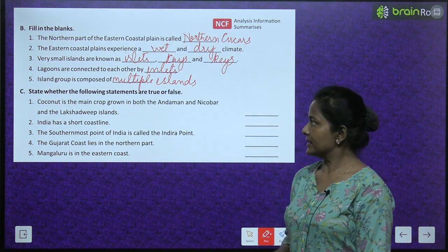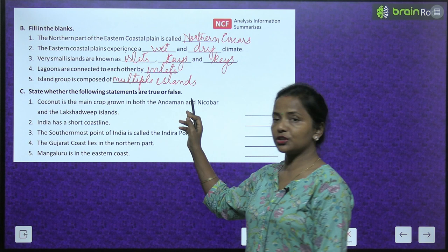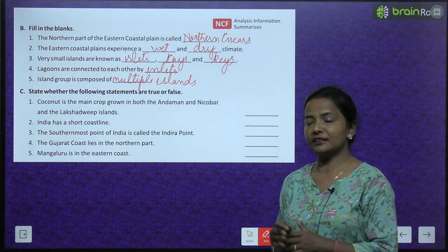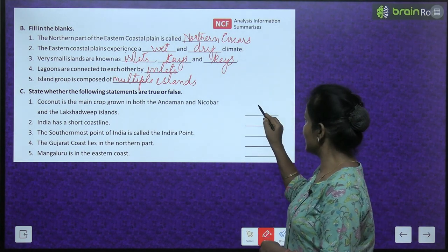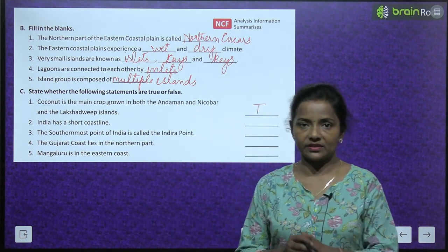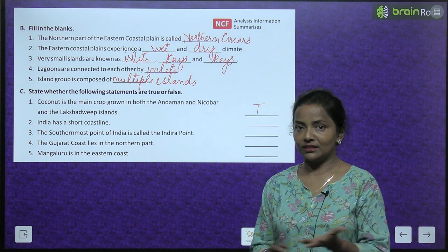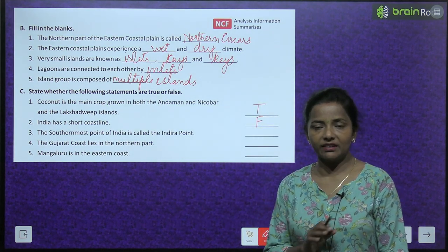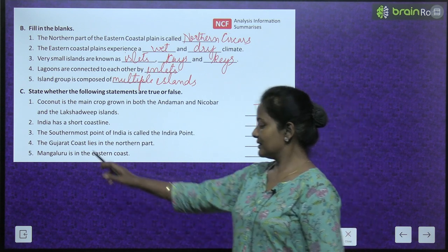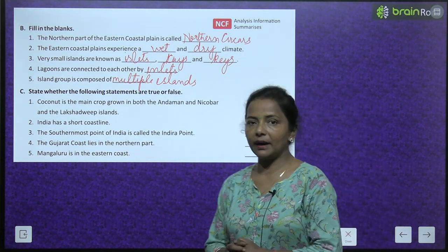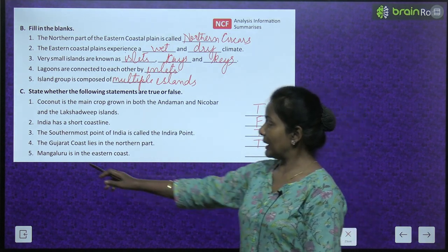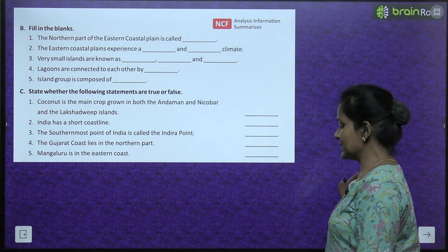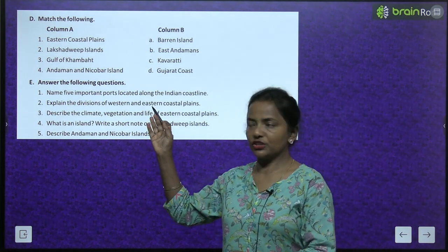Now let's do the True/False section. Coconut is the main crop grown in both Andaman and Nicobar and Lakshadweep Islands — True. India has a short coastline — False, it has a long coastline. The southernmost point of India is called the Indira Point — True. The Gujarat coast lies in the northern part — True. Mangaluru is in the eastern coast — False.